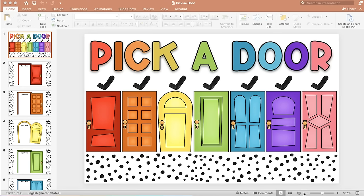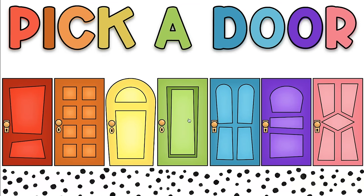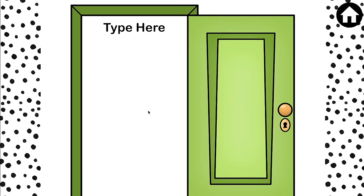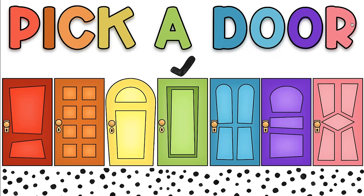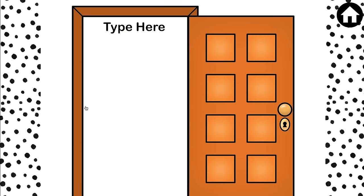What you do is go to presentation mode and ask your students to pick a door. When they pick a door, they'll have a question they need to answer, and you'll see a checkmark pop up. So if a student picks the green door, you would have the question ready, or a visual, or something you want them to answer. Then click the home button to go back, and the checkmark appears so other students don't pick the same door. That process repeats every time a child chooses a door.